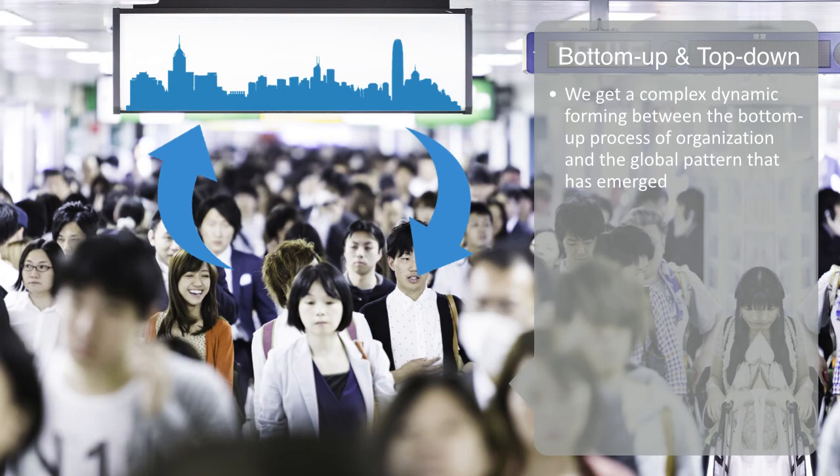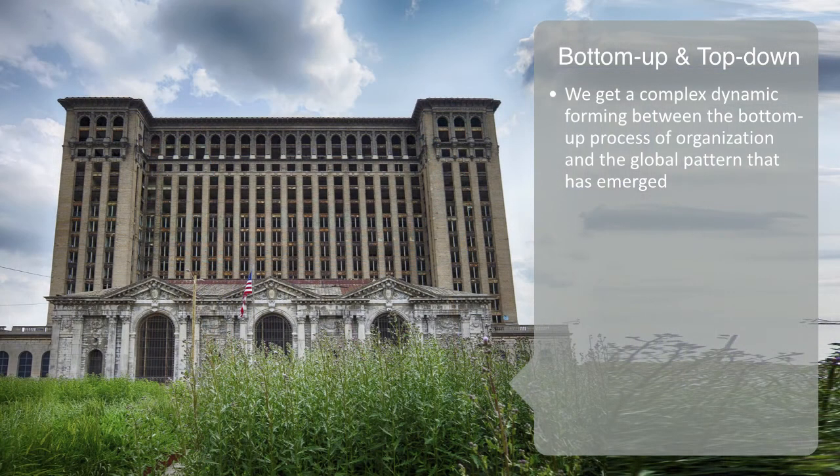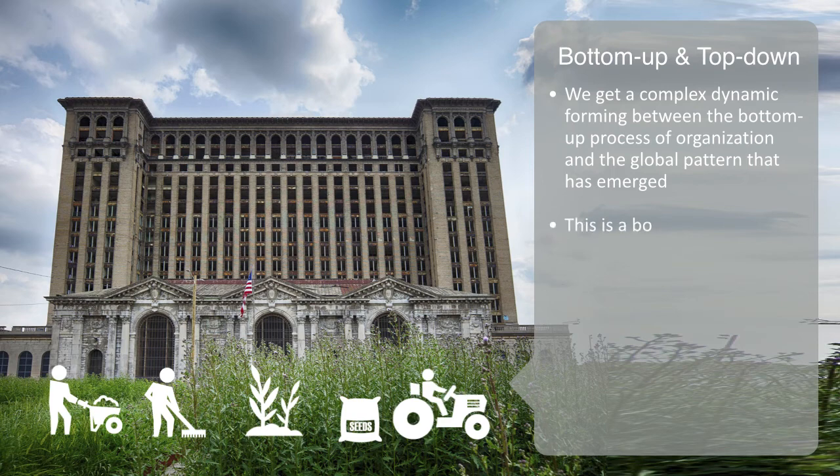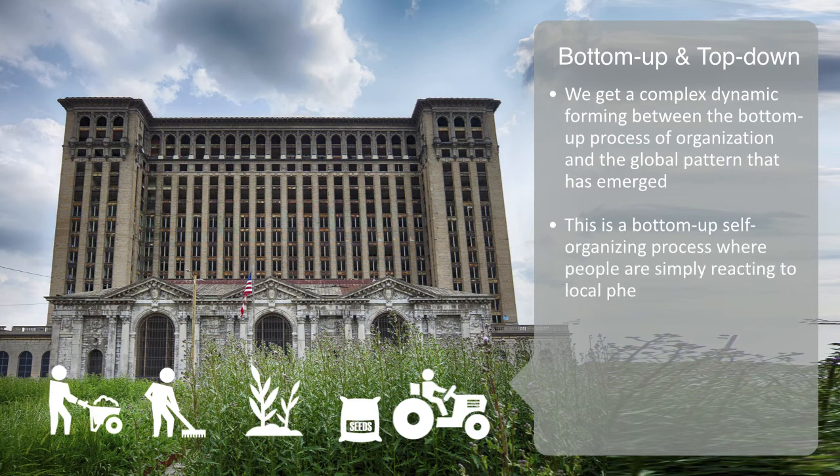As an example of this, we might think about the phenomena, of urban gardening, in Detroit USA. Where due to a mass exodus of people, there's a significant amount, of unused land, within the city. And locals have moved in, to start small garden farms, on these open spaces. This is a bottom up, self organizing process, where people, are simply reacting, to local phenomena.